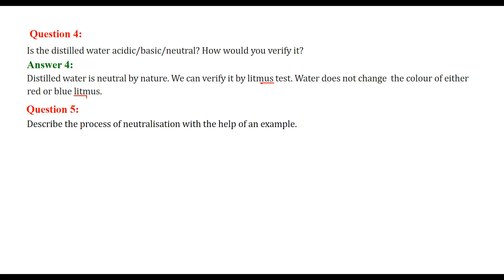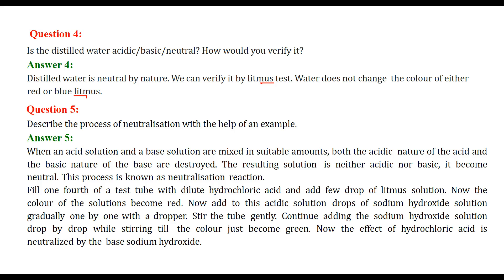Describe the process of neutralization with the help of an example. Neutralization means if there is an acid, you put a base — it will be neutralized, and vice versa. When an acid solution and a basic solution are mixed in suitable amounts, both the acidic and basic natures are destroyed. The resulting solution is neither acidic nor basic — it becomes neutral. This process is known as a neutralization reaction.